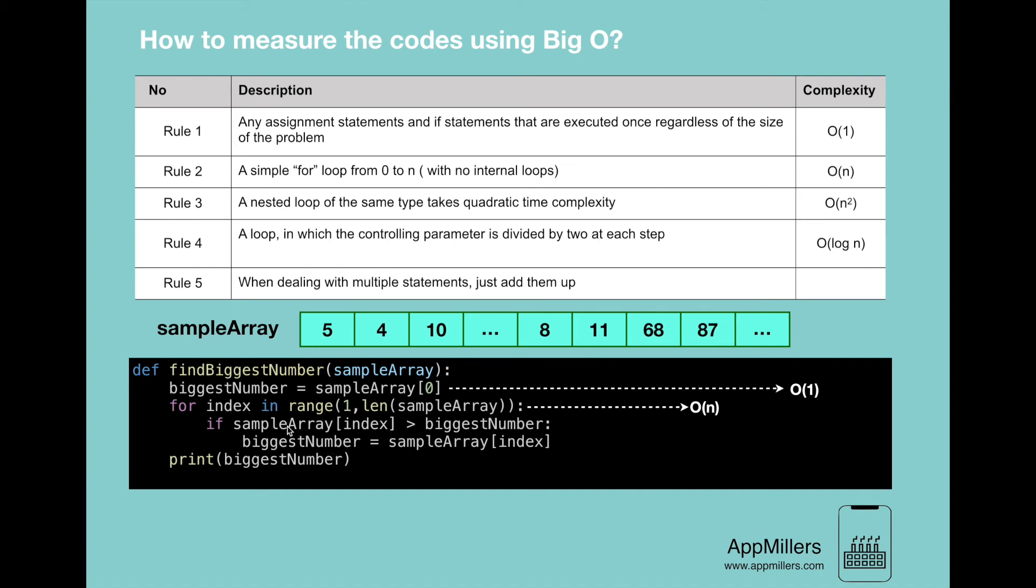Then inside loop, we have if condition. And again, the first rule says that if statements take constant time complexity. And which means that if condition over here will take complexity of O(1).